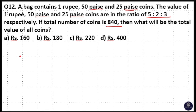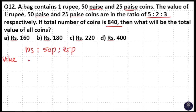We have to find the total value of all coins. We have 1 rupee, 50 paisa, and 25 paisa coins. The ratio of value is equal to 5 to 2 to 3. So we don't know the number of coins ratio here.